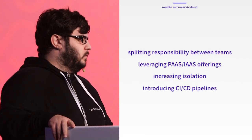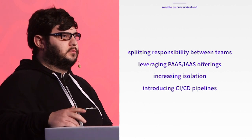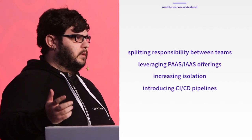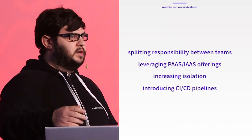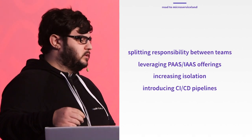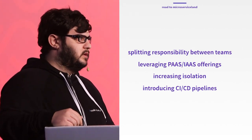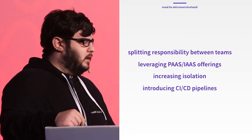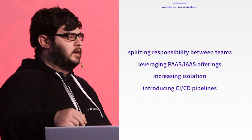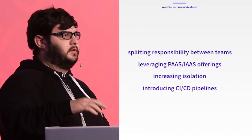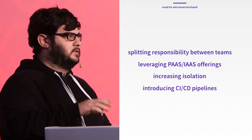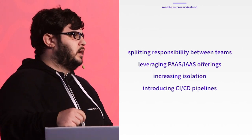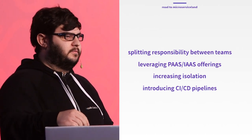So what did we do? We split the responsibility of how the deployment was done to the teams themselves. Basically, as long as you know how to run it, it's up to you. We started leveraging platform as a service and infrastructure as a service. Almost every product that Amazon offers, we used or at least tried. That increased isolation — at least we had some VMs running in specific places, which is already a layer. And that's when we switched to GitLab from GitHub, and finally we could have proper data for CI/CD.